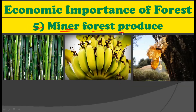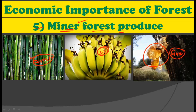The next economic importance of the forest is minor forest produce. From the forest we get bamboo, which is used for construction purposes and other purposes as well. Then we have wild fruits from the forest and things like gum from the forest. So all these minor forest produce are also coming from the forest, which is also one of the economic importances of the forest.